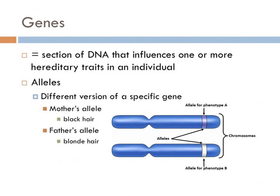Each gene is made up of two alleles. You got one allele from your mom and one allele from your dad. An allele is nothing more than a different version of the same gene. For example, your mom may have given you an allele for black hair, whereas your dad may have given you an allele for blonde hair.